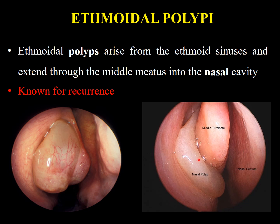These nasal polypi — here is the middle turbinate, the lateral nasal wall, and the inferior turbinate. The polyp is coming from the ethmoids, the maxillary sinus, or any other area. These ethmoidal polypi are known for their recurrence.